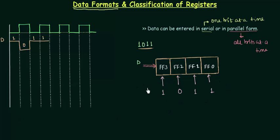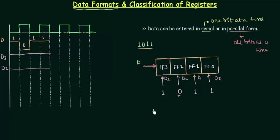If you want to plot this in the timing diagram, first we will have D3. D3 is the input to flip-flop number 3, then D2, D1, and D0. D3 is high so I will make it high. D2 is low, D1 is high, and D0 is high — so this represents 1011.